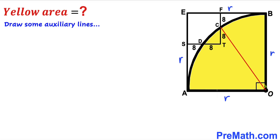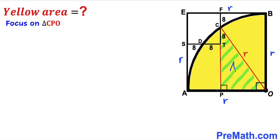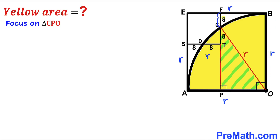I have connected center O with point C. We can observe that CO is the radius of the quarter circle as well. Furthermore, I have extended line FT all the way to point P such that we get right triangle CPO. Focusing on this right triangle, FP length equals BO length which is radius r, so FP is r. Since segment FC is 8 units, the remaining length CP turns out to be r minus 8.